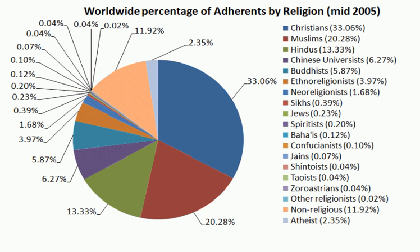Jainism and Buddhism belong to the Shramana tradition. These religions rose into prominence in 700–500 BCE in the Magadha Kingdom, reflecting the cosmology and anthropology of a much older, pre-Aryan upper class of northeastern India, and were responsible for the related concepts of samsara and moksha. The Shramana movements challenged the orthodoxy of the rituals. Mahavira, proponent of Jainism, and Buddha, founder of Buddhism, were the most prominent icons of this movement. Shramana gave rise to the concept of the cycle of birth and death, samsara, and the concept of liberation.